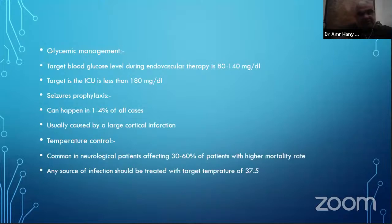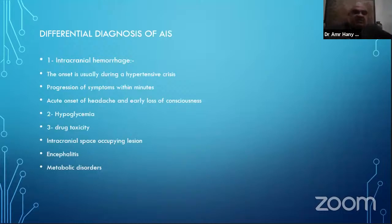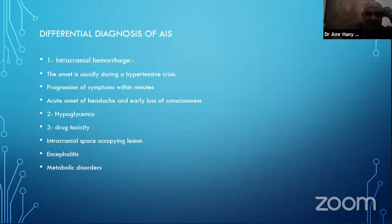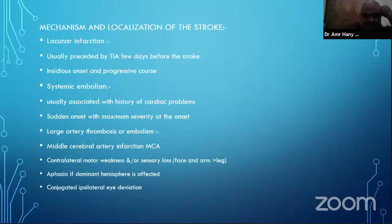Seizure prophylaxis: seizures occur in 1–4% of all stroke cases, usually from large cortical infarctions — provide prophylaxis and treatment. Temperature management: target temperature 37.5°C; treat any source of infection, as fever with stroke is associated with higher mortality. Differential diagnosis of acute ischemic stroke: (1) intracranial hemorrhage — onset during hypertensive crisis, symptoms progress within minutes, acute onset of headache and early loss of consciousness; (2) hypoglycemia; (3) drug toxicity; (4) intracranial space-occupying lesion; (5) encephalitis; (6) metabolic disorders.